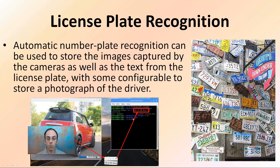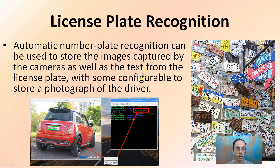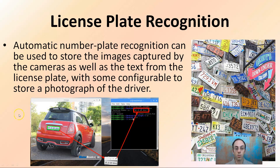License plate recognition is one example. Automatic number plate recognition can be used to store images captured by cameras, as well as text from the license plate, with some configurability to store a photograph of the driver. We have that connection between the license plate and the car, the time, and potentially the driver. It can be important for crime scene investigation, tracing where someone went.